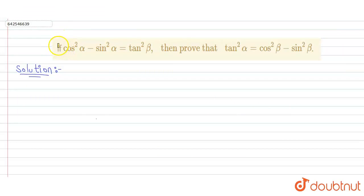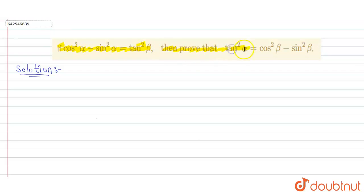Hello guys, so our question is: if cos squared alpha minus sin squared alpha equals tan squared beta, then we have to prove that tan squared alpha is equal to cos squared beta minus sin squared beta. So let us start.